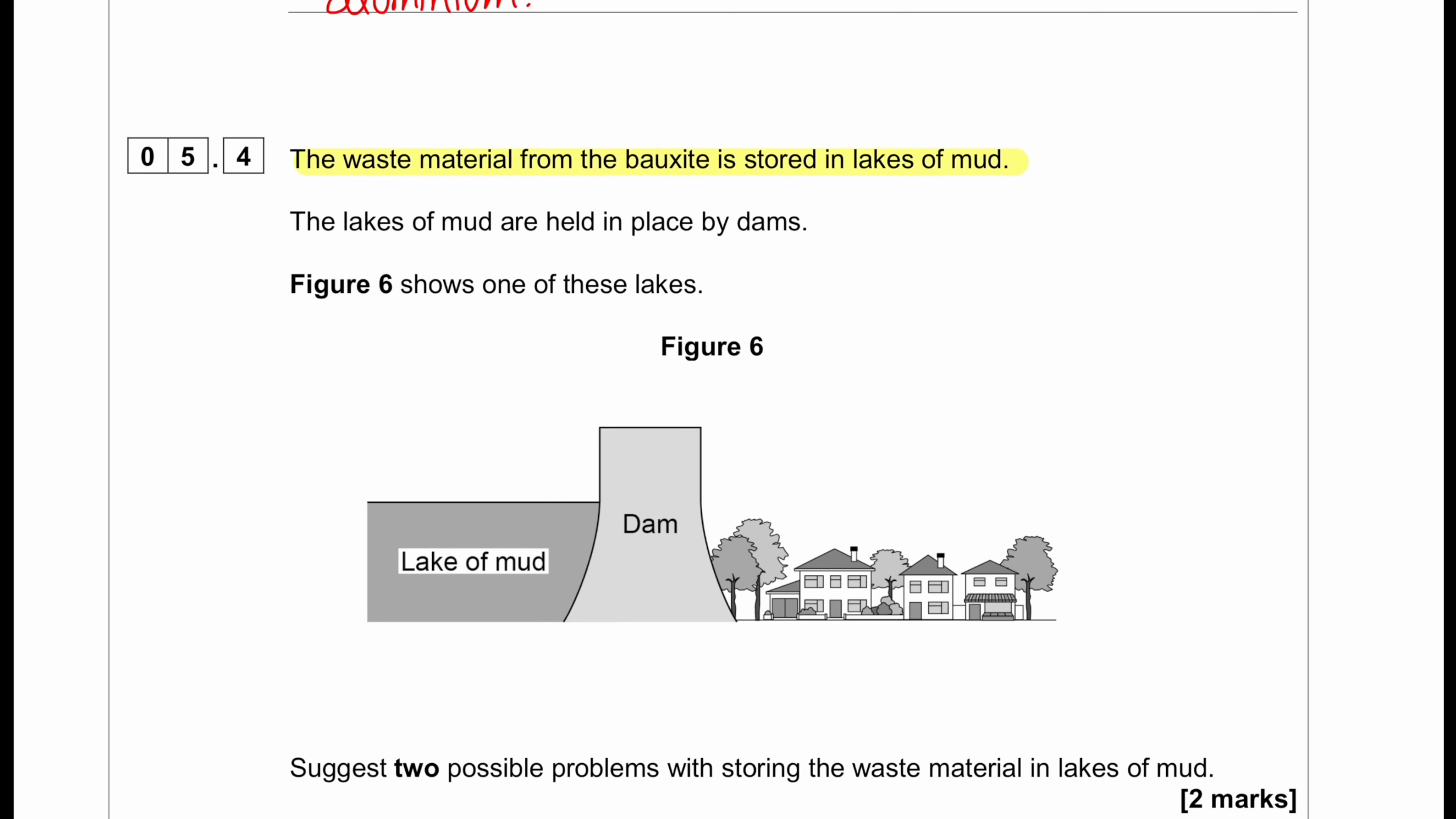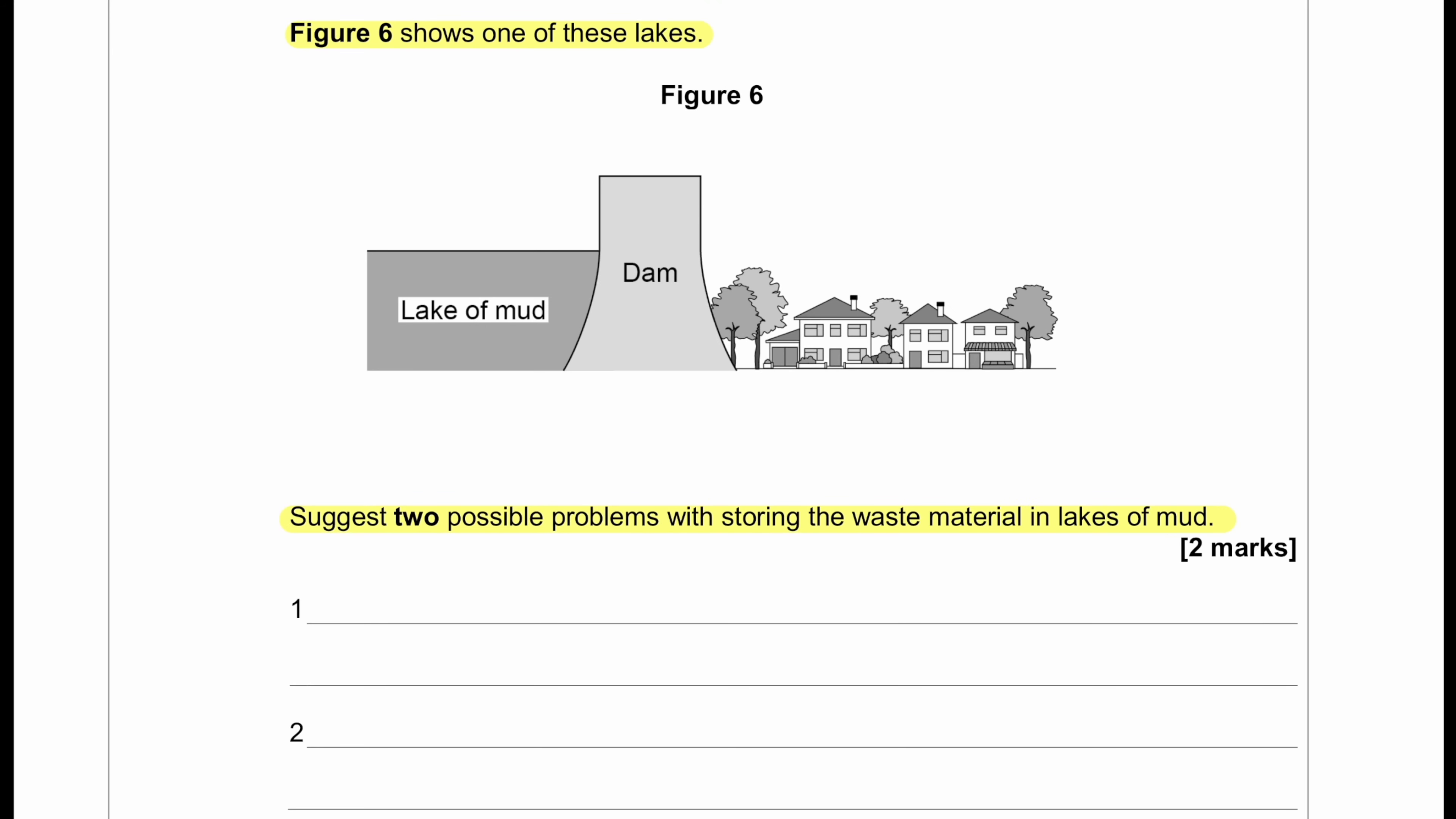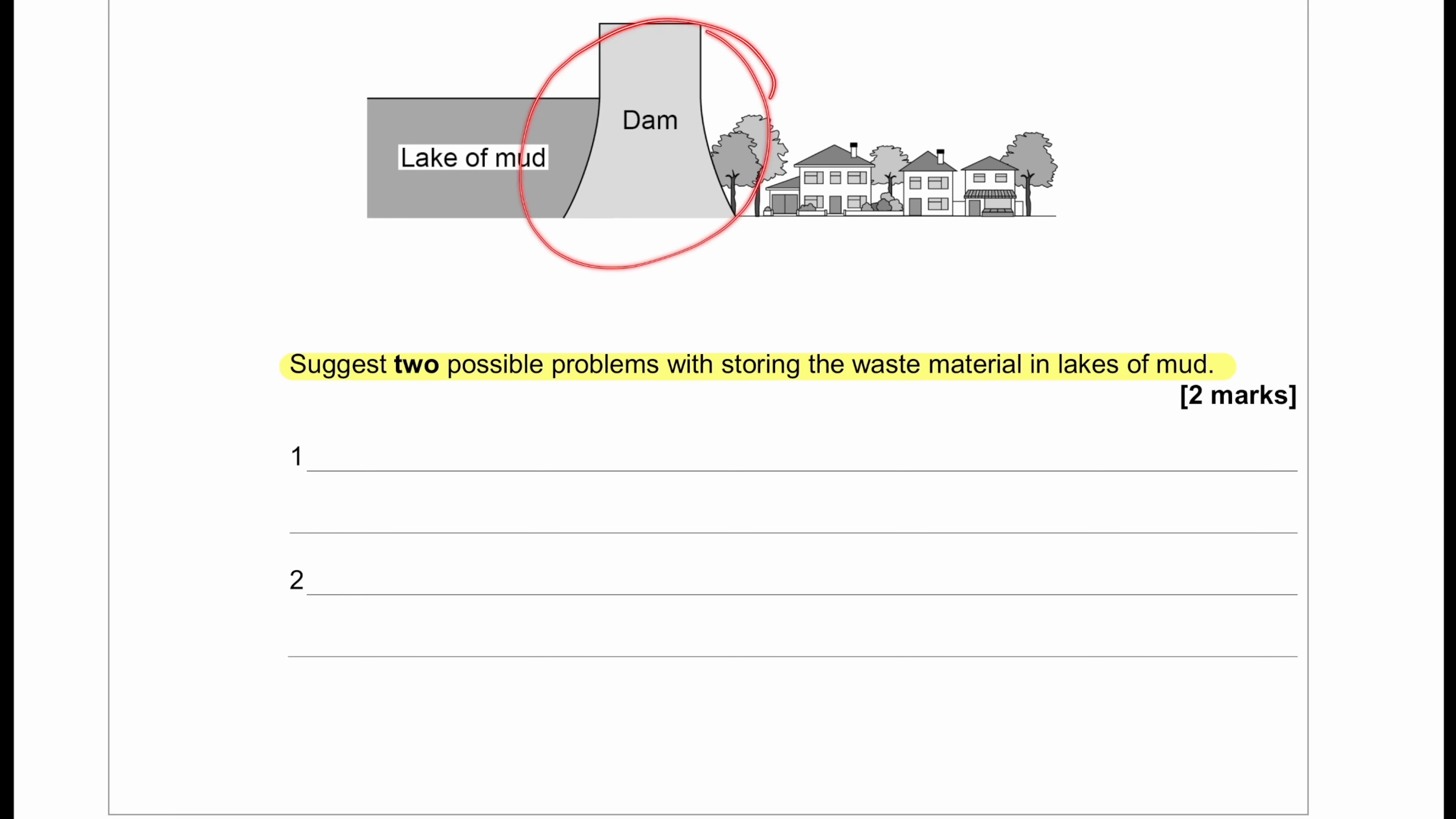The waste material from bauxite is stored in lakes of mud. The lakes of mud are held in place by dams. Figure six shows one of these lakes. Suggest two possible problems with storing the waste materials in lakes of mud. We can see from the picture that if the dam collapses, this housing will also collapse with it. So the danger of the dam bursting will be one problem. The other problem that can be is leakage of toxic substances from mud to the nearby surrounding environment. Water pollution for the surrounding environment can also happen, damage to habitats, visual pollution can happen, and the dam can block light for the nearby houses and reduces the value of the houses. There can be unpleasant smell that can come from that particular mud. However, we only have options for two, so we're going to write only two.